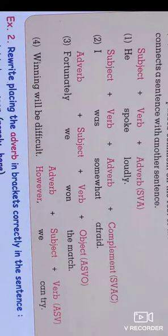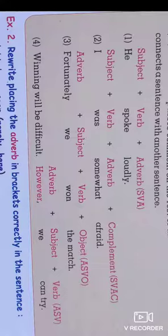The second example is 'I was somewhat afraid.' Here 'I' is the subject pronoun, 'was' is the verb, 'somewhat' is the adverb, and 'afraid' is the complement.